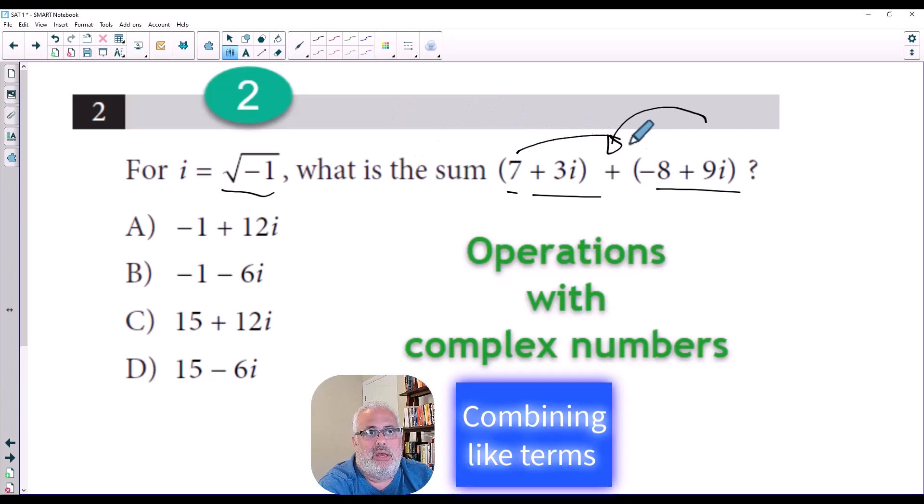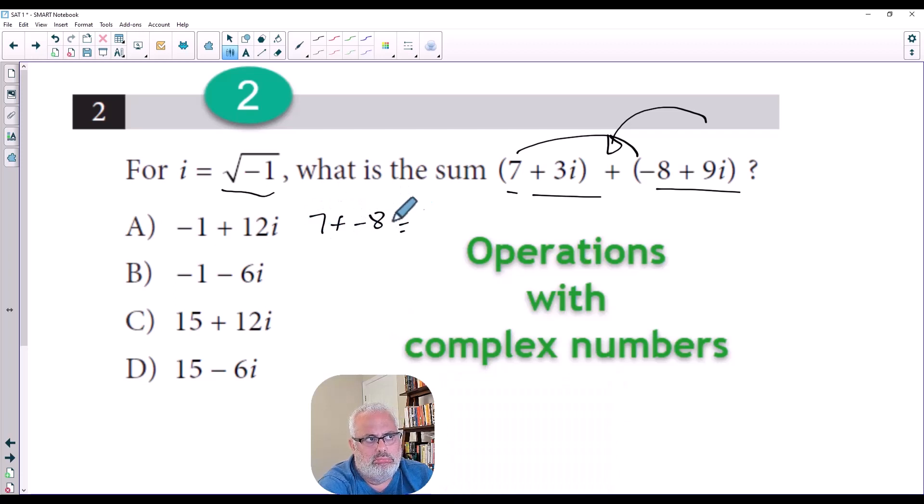So basically here is 7 plus negative 8, which is equal negative 1. I'm done with the numbers. And then let me work with the other expression. 3i plus 9i.